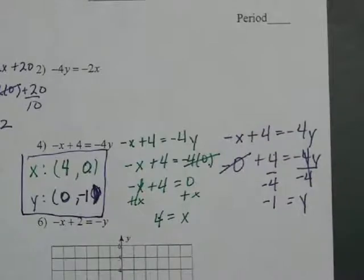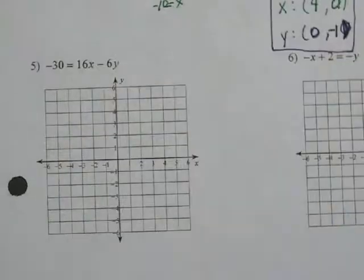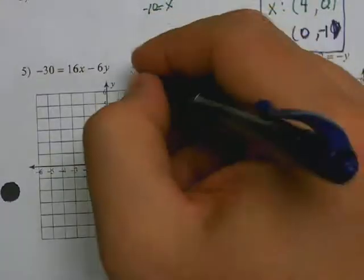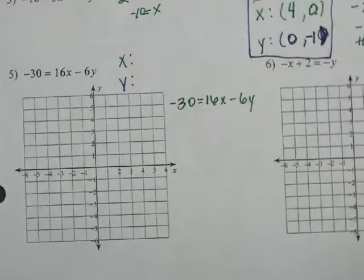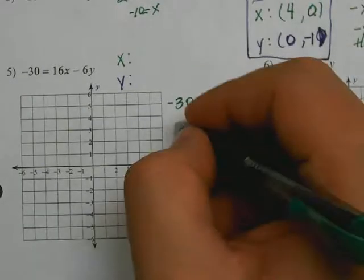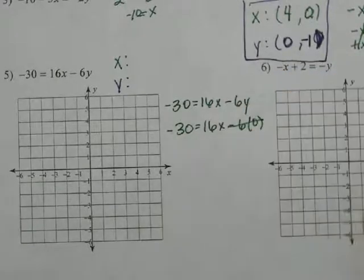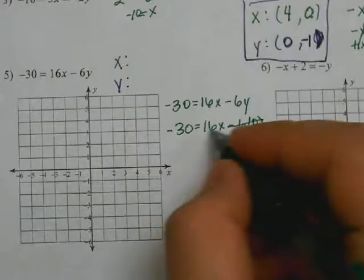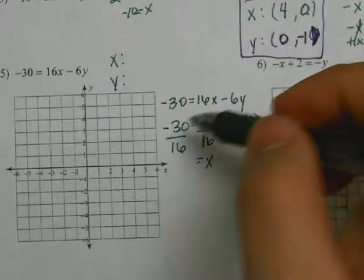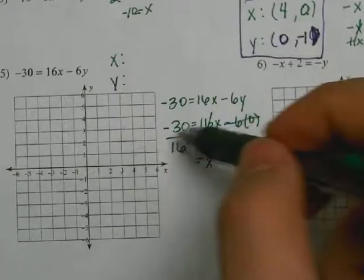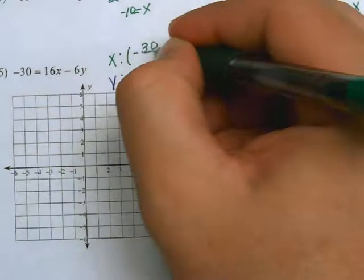Now going to number 5, which is where we start with the graphs. You're doing the same thing but this time you're going to graph it. My main objective is to find the x intercept and the y intercept. I rewrite the problem: negative 30 equals 16x minus 6y. To find the x intercept, substitute 0 in for y, so negative 30 equals 16x minus 6 times 0. That cancels, leaving negative 30 equals 16x. Divide both sides by 16, and x equals negative 30 over 16.